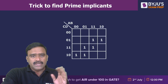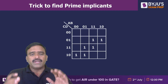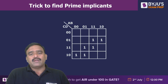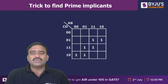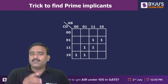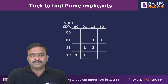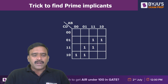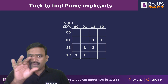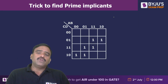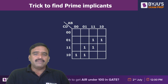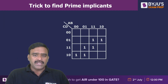Now let's see how we can identify a prime implicant. I will give you simple tricks with the help of examples. Basically, prime implicants — if any equation of the Boolean function is given by means of some notations,